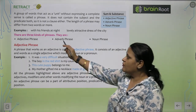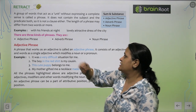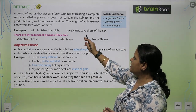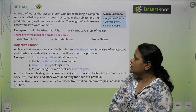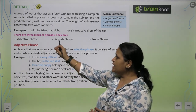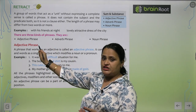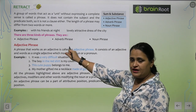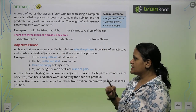Examples: 'with his friends at night,' 'lovely attractive dress of the city.' There are three kinds of phrases: adjective phrase, adverb phrase, and noun phrase.